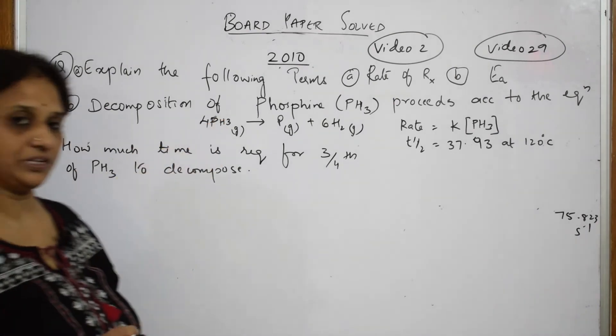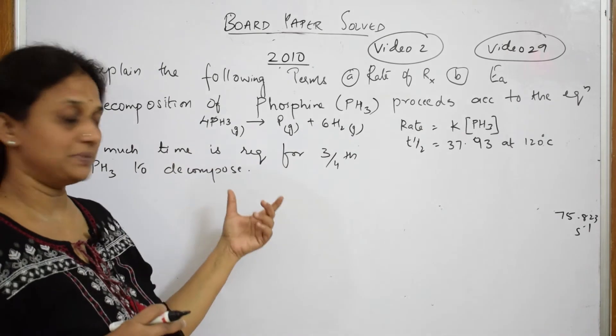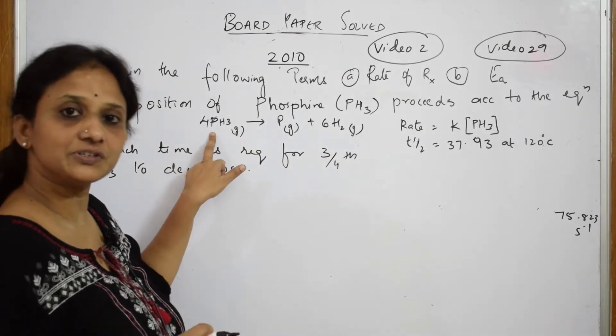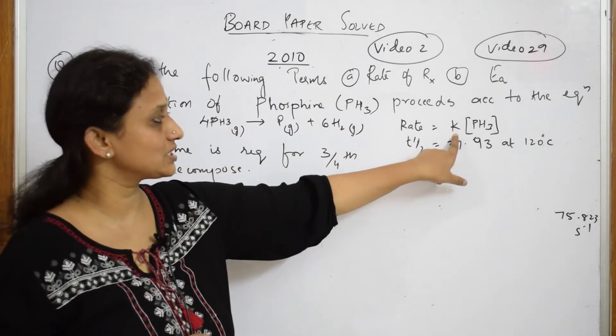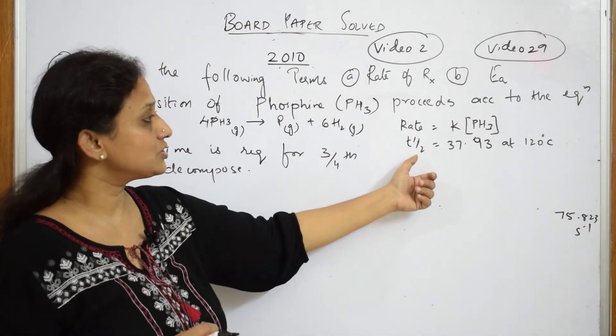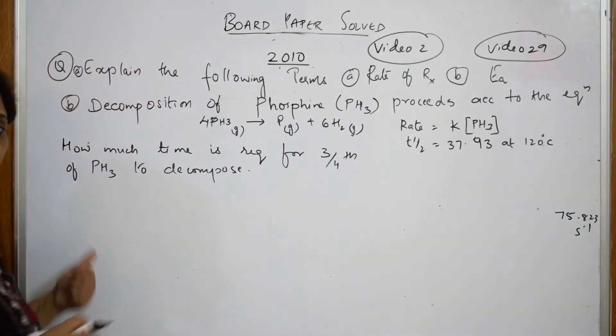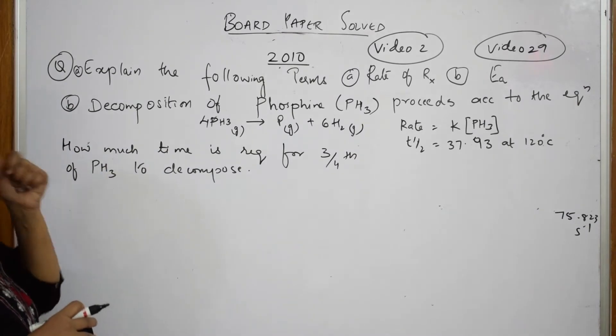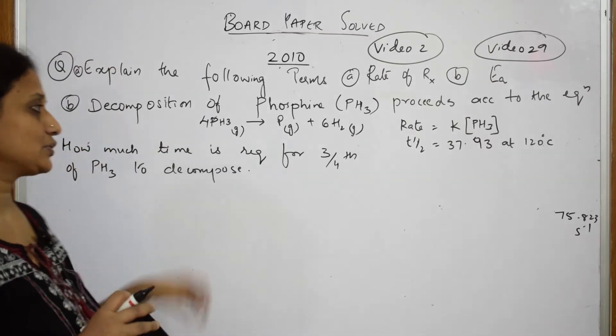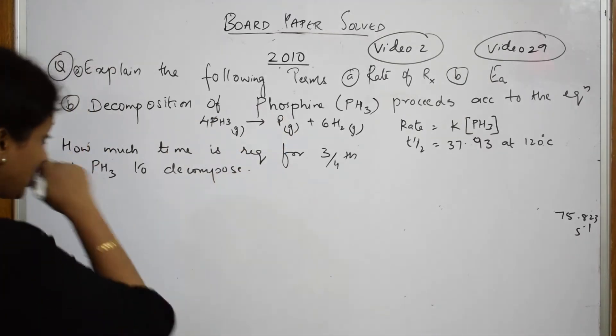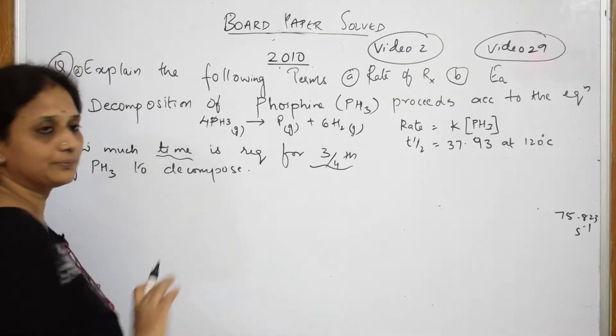Let us read this question. Decomposition of phosphine PH3 proceeds according to this equation. There is one equation given to us, and they have given us, now because this is the first order rate equation, the rate depends upon only one concentration term. They also mentioned, they have also given us the half-life period of this particular reaction. What should I find out? I have to find out how much time is required for 3/4 of phosphine to decompose.